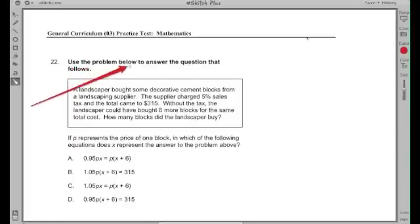Question 22: Use the problem below to answer the question that follows. A landscaper bought some decorative cement blocks from a landscaping supplier. The supplier charged 5% sales tax and the total came to $315. Without the tax, the landscaper could have bought six more blocks for the same total cost. How many blocks did the landscaper buy?